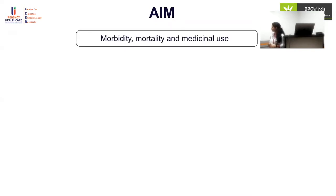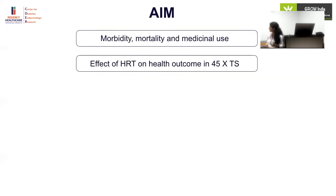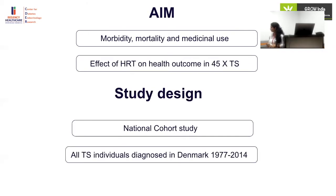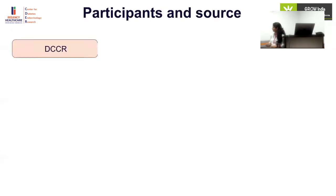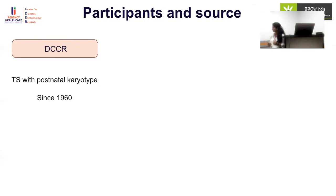The study aims to determine morbidity and mortality in Turner syndrome women compared to population controls, and to determine the effect of hormone replacement therapy on health outcomes especially in classical 45,X Turner syndrome. The design is a national cohort study of Turner syndrome individuals diagnosed in Denmark between 1977 and 2014. Participants were selected from the DCCR — the Danish Cytogenetic Central Registry, which contains all prenatal and postnatal karyotype information performed after 1960.